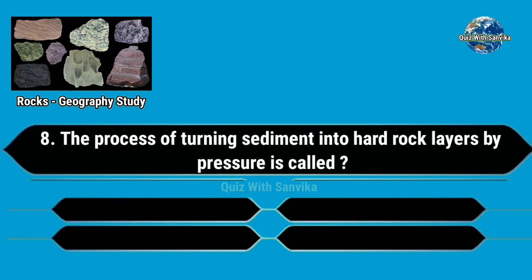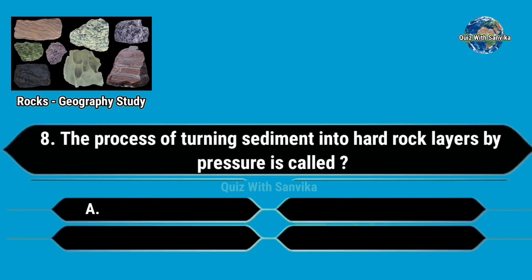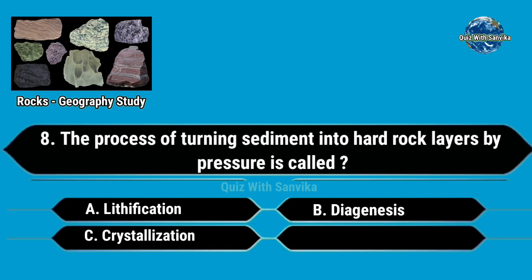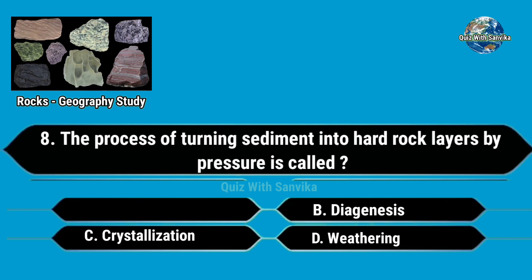The process of turning sediment into hard rock layers by pressure is called. Options are A. Lithification, B. Diagnosis, C. Crystallization, and D. Weathering. Answer is A. Lithification.